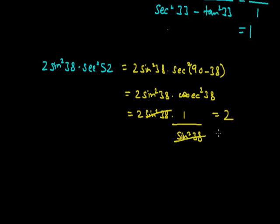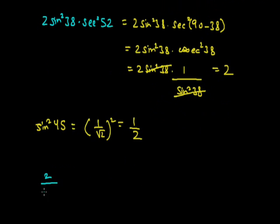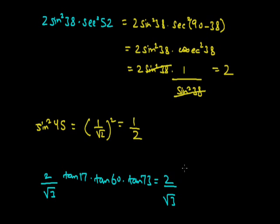The third part is sin²45. Since sin45 = 1/√2, we get (1/√2)² = 1/2. Our last part is (2/√3) · tan17 · tan60 · tan73. We can write tan17 as tan(90 - 73), so it becomes cot73.